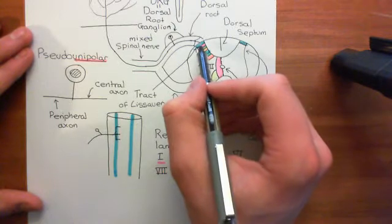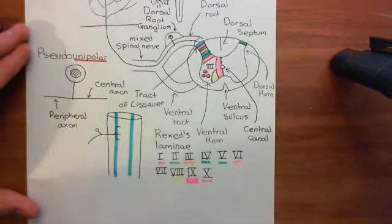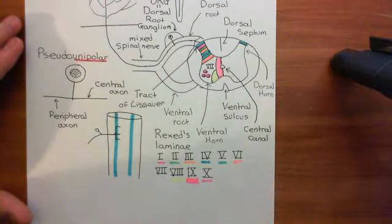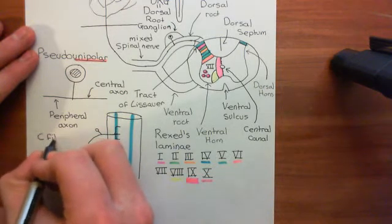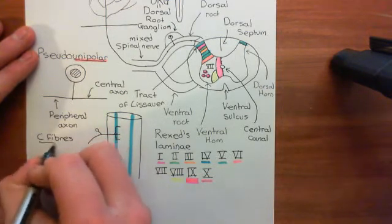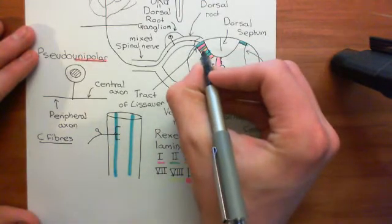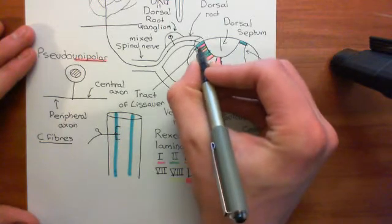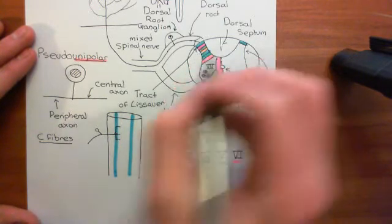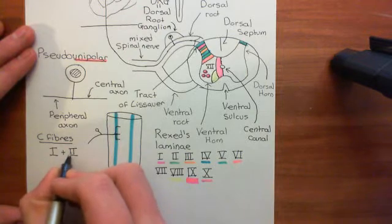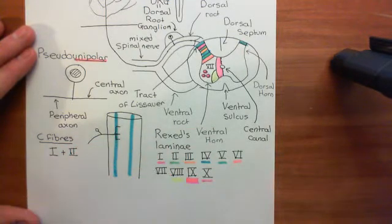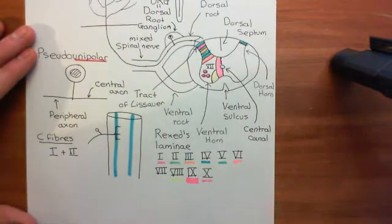What we now want to ask is where do these axons terminate? The answer to that question depends upon whether we are talking about C-fibre nociceptors or A-fibre nociceptors. If we are talking about C-fibre nociceptors, then what will happen is these axons will move into the dorsal horn of the spinal cord, and they will go to Rexed lamina 1 and 2. In Rexed lamina 1 and 2, they will synapse on their secondary neurons.